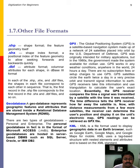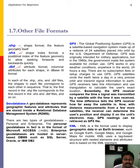To recap: .SHP stores the geometry, .SHX stores the index, and .DBF stores the attribute data. A geodatabase is like the attribute table — a relational database management system (DBMS). If it references geospatial data, it is a geodatabase; if there is no geospatial reference, it is a simple database.